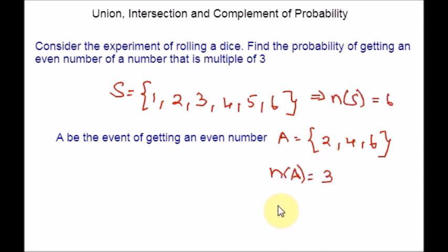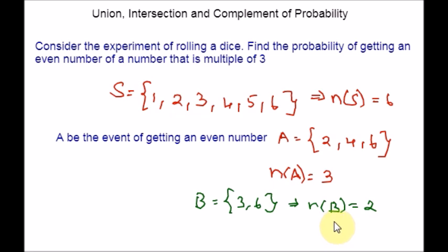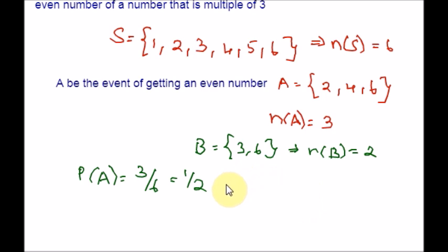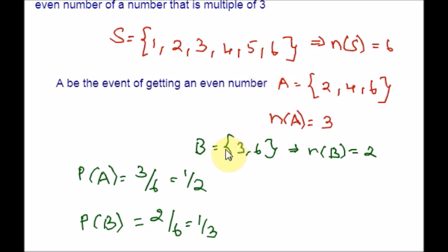Let B be the event of getting a number that is a multiple of 3. The numbers that are multiples of 3 in the sample space are 3 and 6. Now let us find the probability of A and probability of B. P(A) = 3/6 = 1/2. The probability of event B — total favorable outcomes is 2 and total possible outcomes is 6. From these steps, we can clearly see that events are not mutually exclusive — we have something in the intersection. Looking at both lists, the number 6 is common. So A ∩ B = {6}.